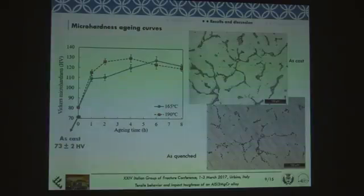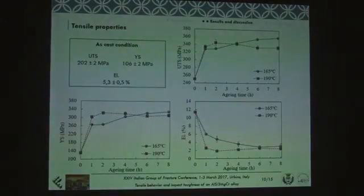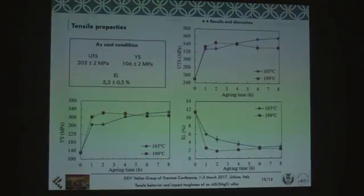Let's go to the mechanical properties. Here on the aging curves, in terms of Vickers micro-hardness, it is evident that increasing the temperature — as expected — we reached the peak condition earlier, without in this case a significant loss in hardness. This difference is not so evident if we consider tensile properties; the difference between material performance when changing the aging temperature is not so evident if we consider the strength, both ultimate and yield strength.